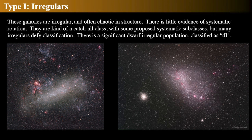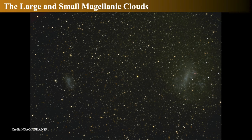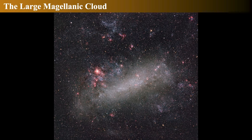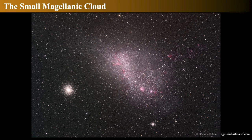Now we get to the second-to-last of our classifications: the irregular types. Basically, they look like train wrecks. An irregular is not an elliptical, not a spiral, and has no spiral structure — but they tend to have a lot of star formation going on. These are the two Large and Small Magellanic Clouds. When we take amazing views of the Large Magellanic Cloud, we see lots of gas and dust, star formation going on, and a huge amount of activity. It's a turbulent place where stars are being born everywhere. The Large Magellanic Cloud is about 200,000 light-years away — the light has been traveling for about 200,000 years to get to us.